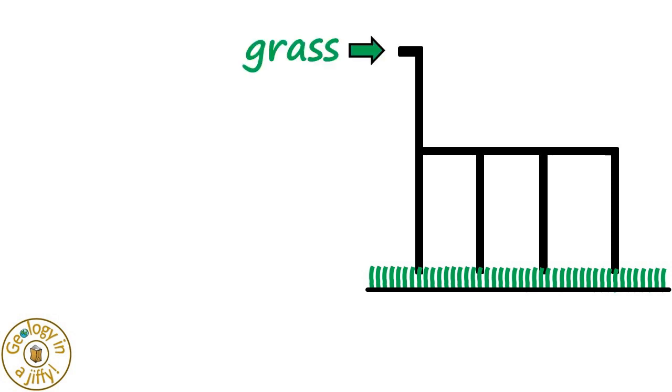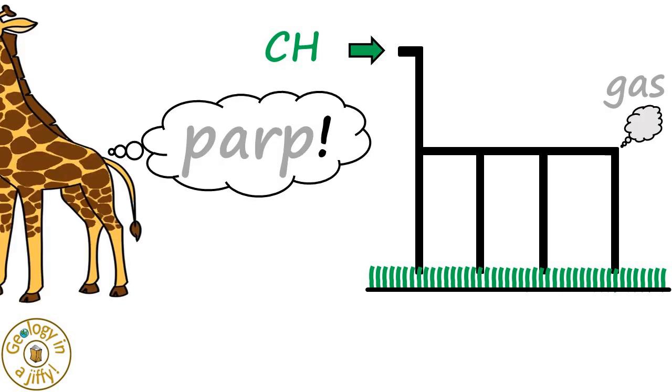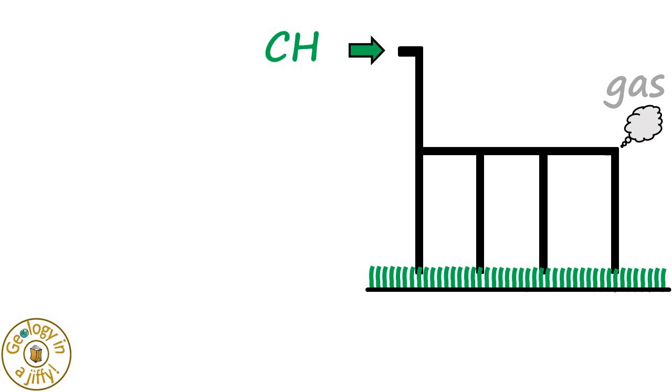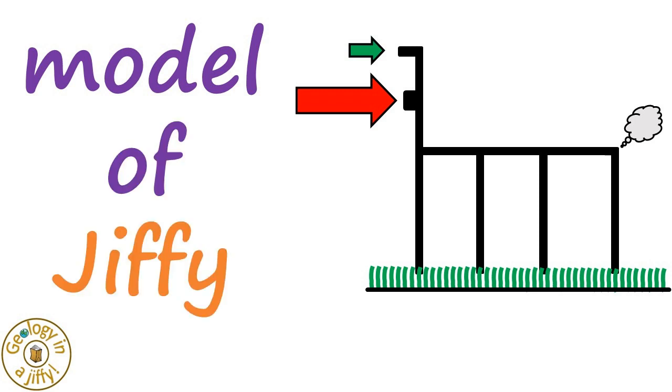Jiffy eats grass, shortened to CH, and makes gas when digesting the grass. And also, here is Jiffy's voice box. And this is now the model of Jiffy.